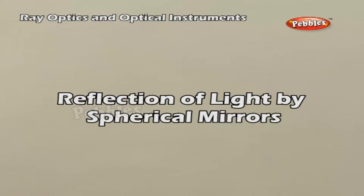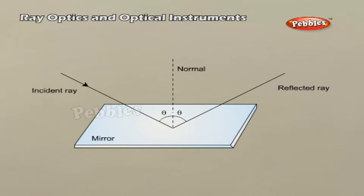Reflection of Light by Spherical Mirrors. The angle of reflection, i.e. the angle between the reflected ray and the normal to the reflecting surface or the mirror, equals the angle of incidence. Also, the incident ray, reflected ray, and the normal to the reflecting surface at the point of incidence lie in the same plane.